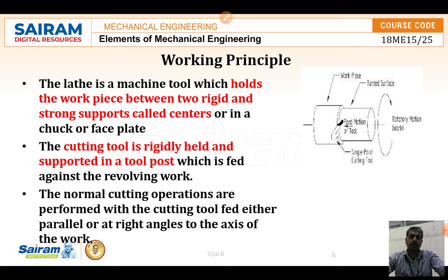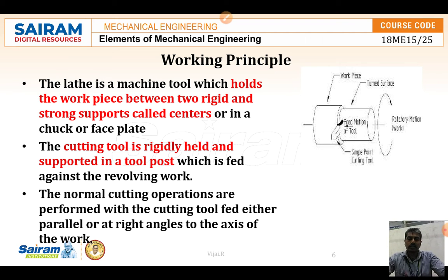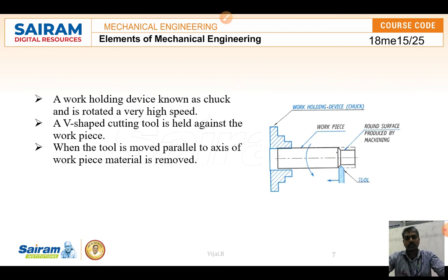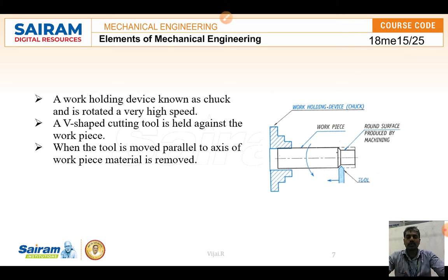The workpiece can be supported by another tool — the tailstock — if the workpiece is very long, giving support on the opposite side. The two centers are called the live center and dead center; the workpiece is held between the live center and dead center and rotated. The cutting tool is rigidly held and moved using the tool post to remove unwanted material. The drawing shows how the workpiece is held in a chuck, where jaws are used to hold the workpiece.